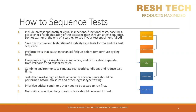Number five: whenever possible, combine environments to both simulate real-world conditions and reduce test time. Number six: tests that involve high-altitude or vacuum environments should be performed before moisture and other ingress type testing. Number seven: prioritize critical conditions that need to be tested and run first. Number eight: non-critical conditions and long duration tests should be saved for last. I want to emphasize item one to ensure that you are thinking about how you will track the health and performance of your product by performing a before and after test comparison to see if there are any changes in your product's behavior.